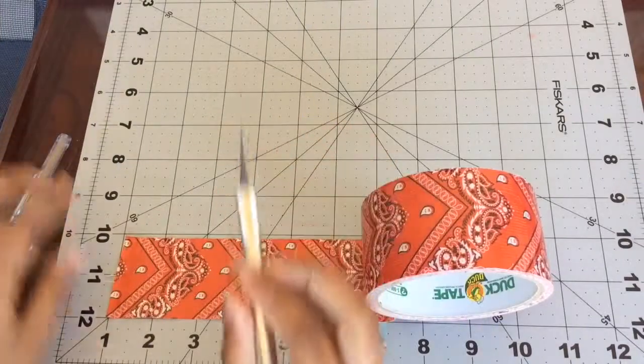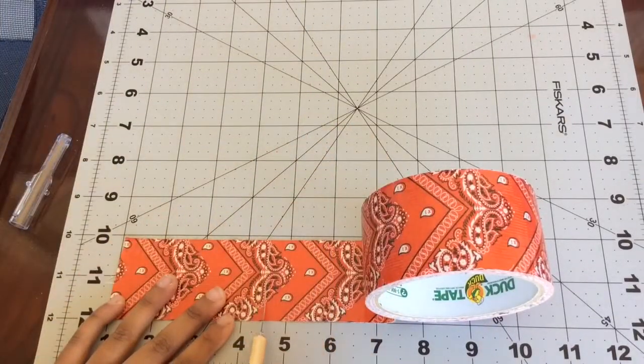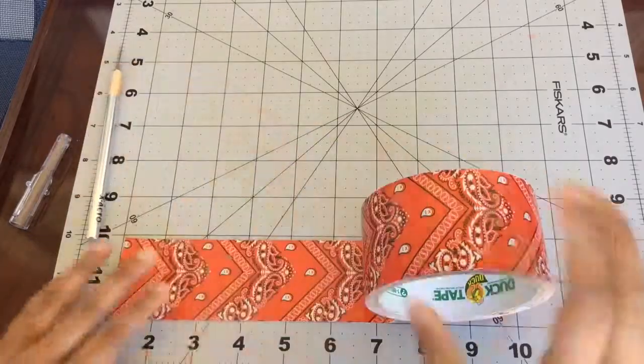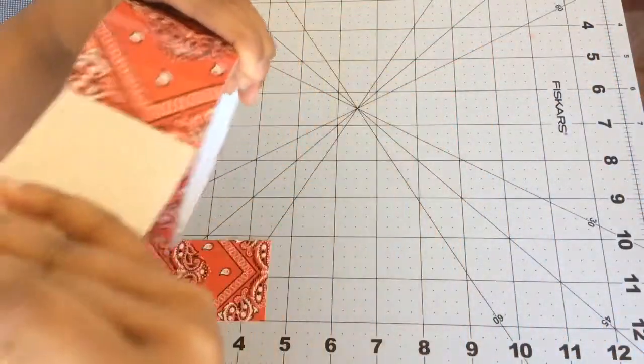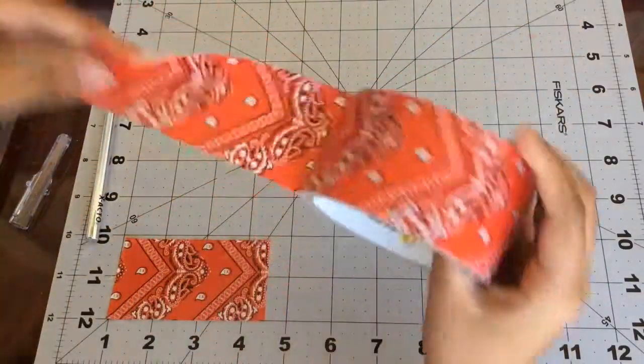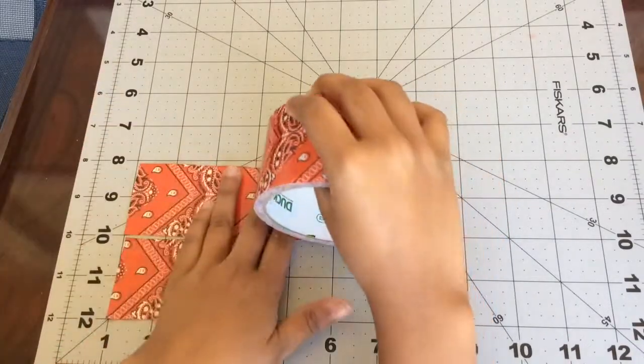Now take your exacto knife and cut the duct tape to about 4 and a half inches. Do the same to another piece of duct tape.